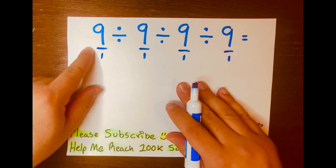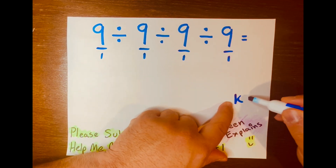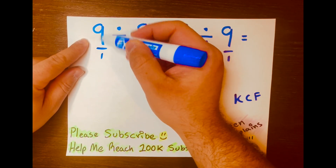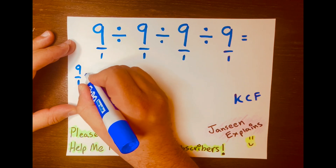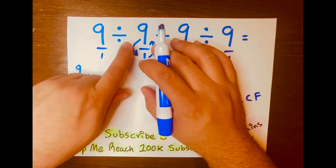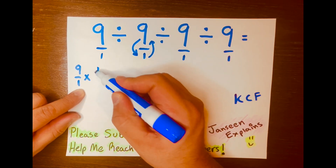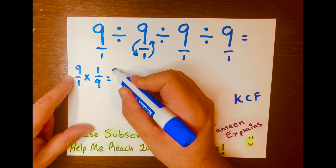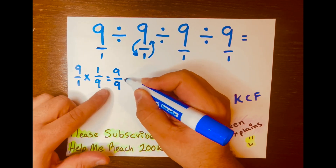Next, you want to use the keep, change, and flip method. You'll keep the first fraction, so I'll write 9 over 1. Then you change the division to multiplication, and then you flip the second fraction — the 1 will go up and the 9 will go down — and you multiply across. 9 times 1 is 9, 1 times 9 is 9, and 9 over 9 equals 1.